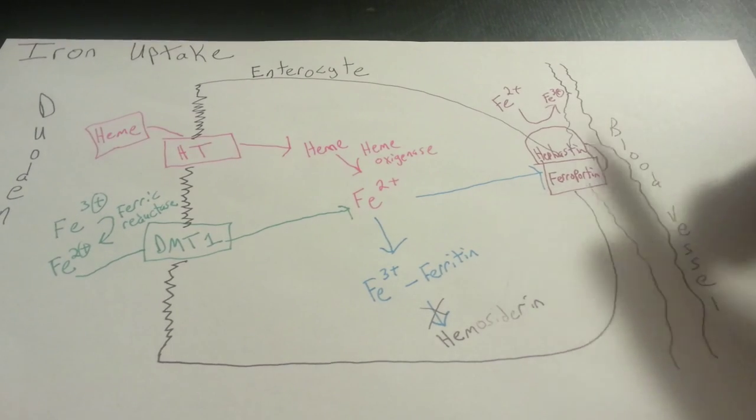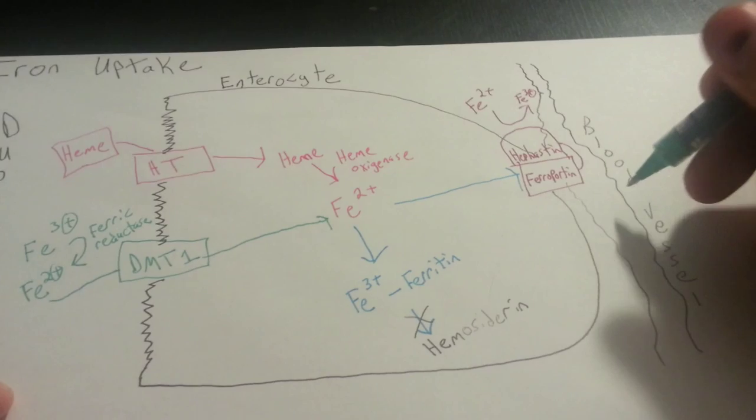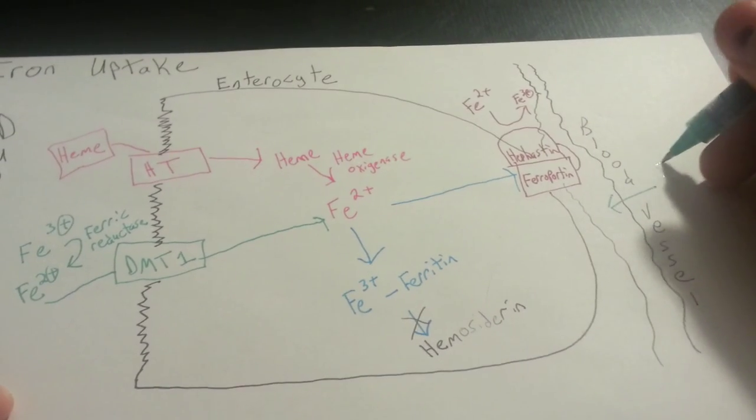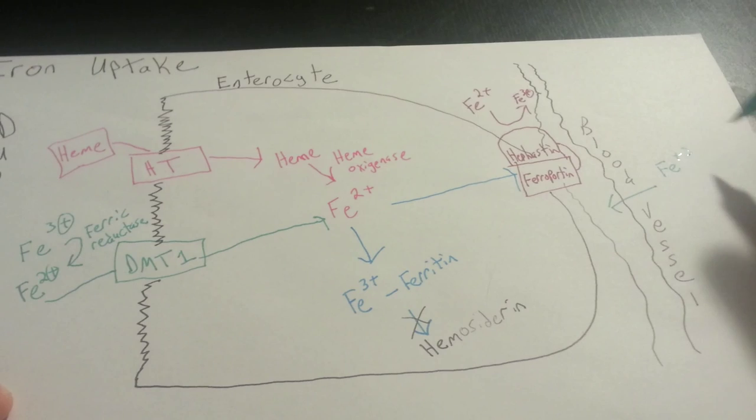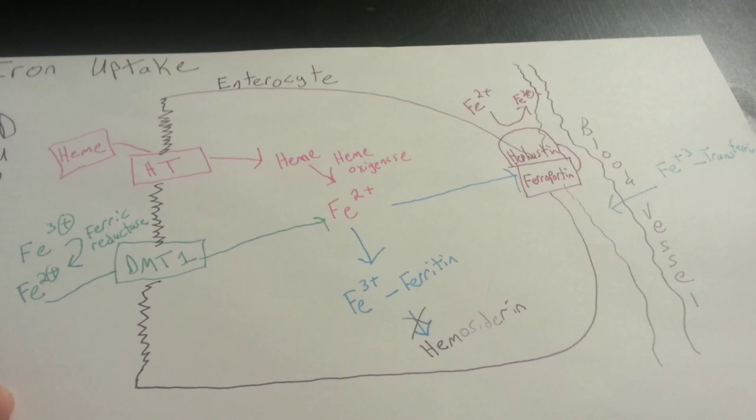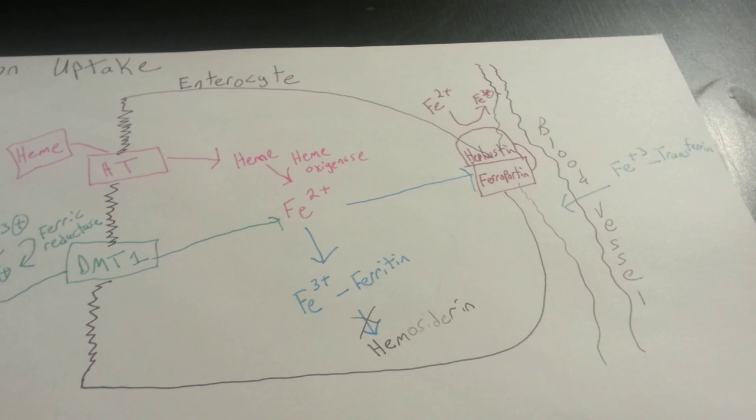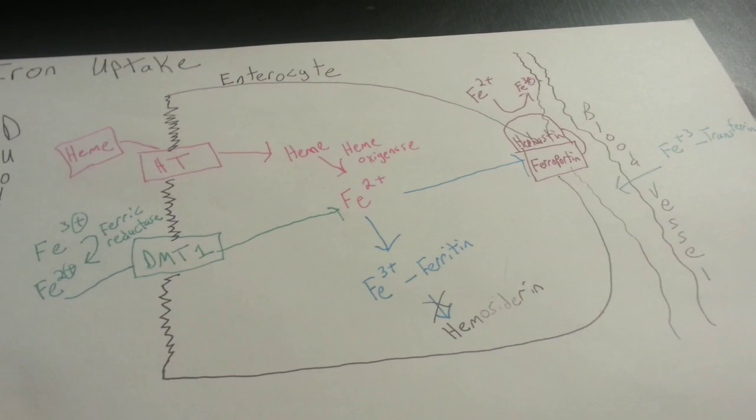And once it is in the Fe3+ form, it can be bound now to transferrin. And this is how it's transported around in the blood. So we have Fe3+ bound to transferrin. And this is how iron is transported through the blood, connected to this molecule. And it also can be then connected to a ceruloplasmin as well, and that's going to help it deliver from a blood vessel to tissues throughout the tissues.